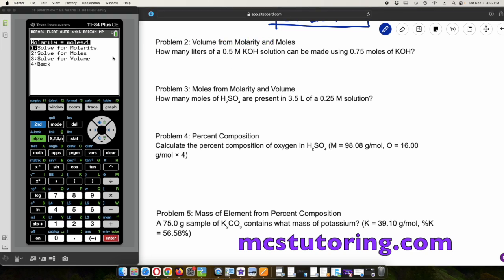Question two, volume from molarity and moles. How many liters of 0.5 molarity KOH solution can be made using 0.75 moles of potassium hydroxide? The moles is 0.75, and then the molarity is 0.5. It looks like the liters is 1.5 liters there.